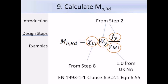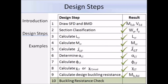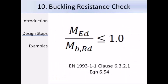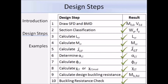Now that we've calculated the design buckling resistance, we compare that value to the design moment calculated in step 1 and ensure that the member is sufficient for buckling resistance. Expression 6.54 must be satisfied: the design moment M_ED must be less than the design buckling resistance M_b,RD. If this expression is not satisfied, you need to change your section or increase the number of lateral restraints. We have now completed all steps to check buckling resistance; you will also need to carry out bending, shear, and deflection checks covered in the restrained beam lectures before the beam can be adopted.